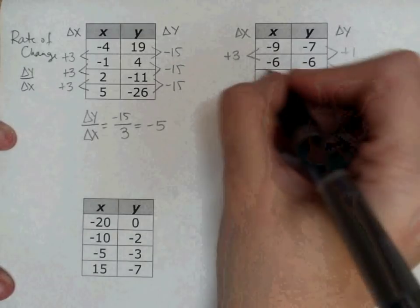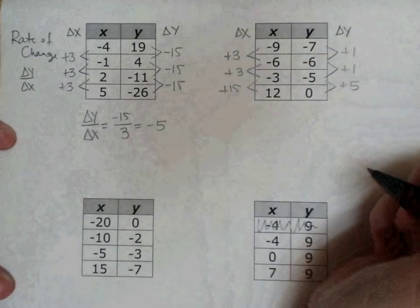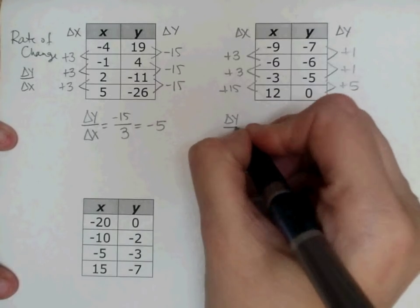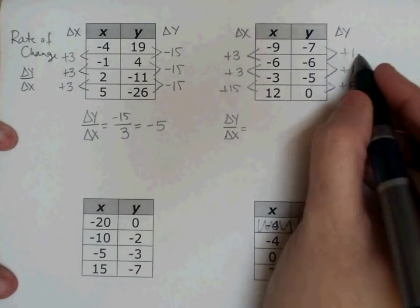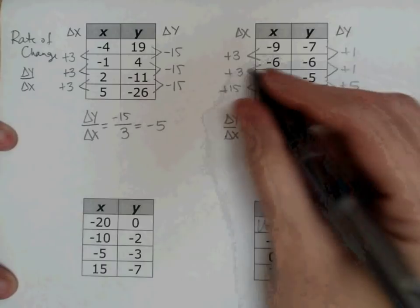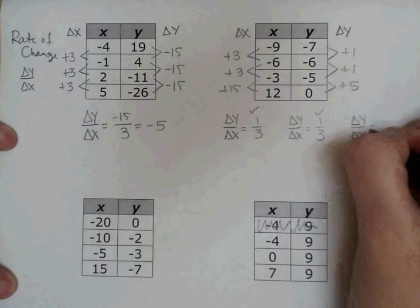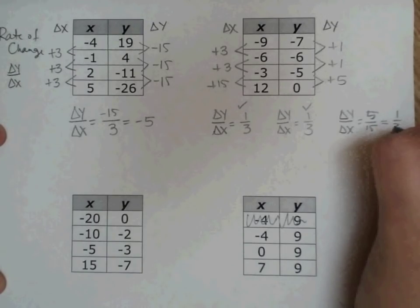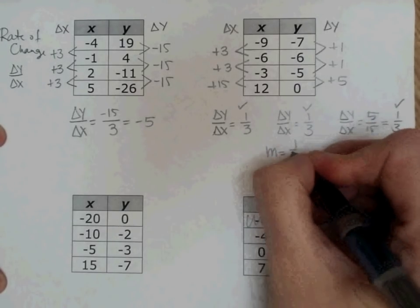So let's look at how my x's are changing. Negative 9 plus 3 is negative 6. Negative 6 plus 3 is negative 3. Negative 3 plus 15 is 12. So right now I'm seeing a different change in x, but I'm going to put them into my rate of change ratio. So delta y, let's look at this first row. 1 over 3 is what I get for the first row. If I do delta y over delta x for the second row, I get 1 over 3 also. So far these two are the same. When I put delta y over delta x on the third one I get 5 over 15 and my alarms go off. But if I reduce 5 over 15, it reduces to 1 third, so it's still the same. So in this case, my slope is 1 third.